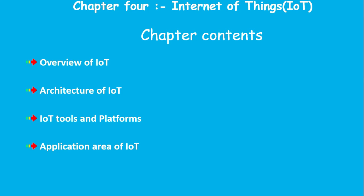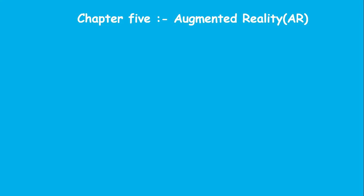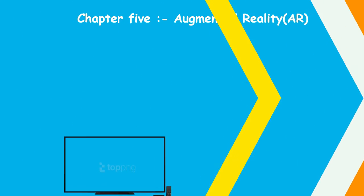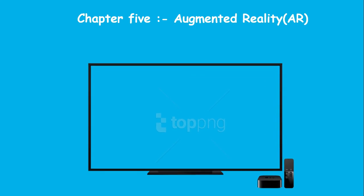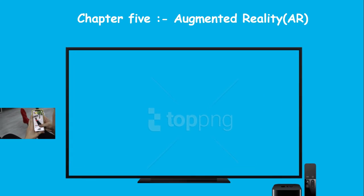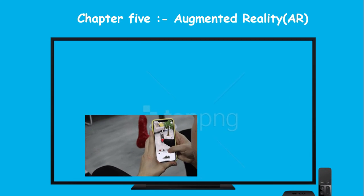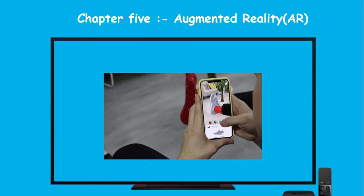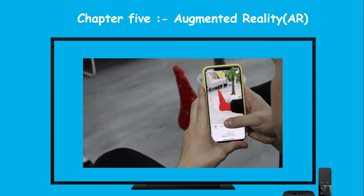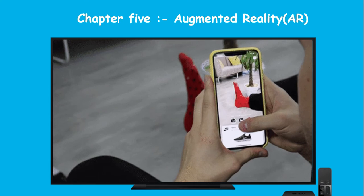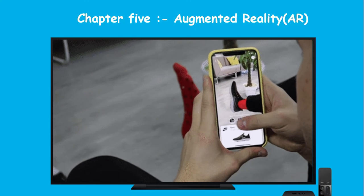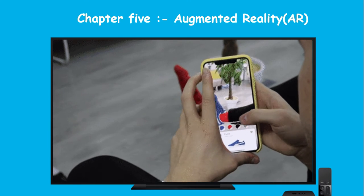Chapter five covers augmented reality and virtual reality. With augmented reality, the environment is virtual with real objects overlaid.